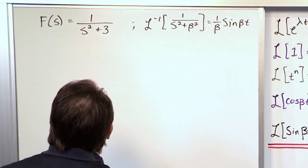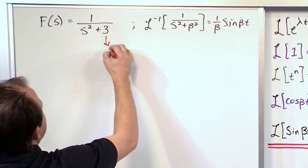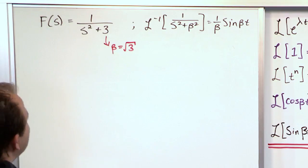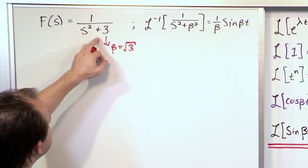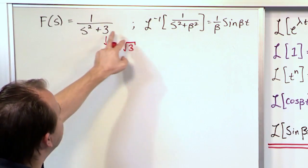What you need to do is just recognize that in this particular problem, to make this look like this, what we're basically going to say is that beta is equal to the square root of 3. If we assume that beta is equal to the square root of 3, then what we have here actually is beta squared, which matches exactly with what we have here.